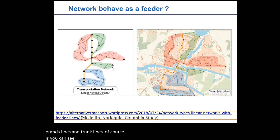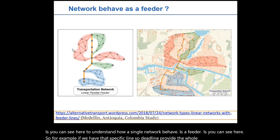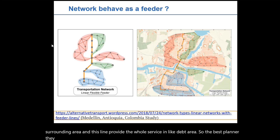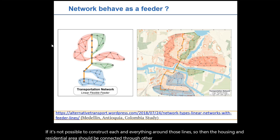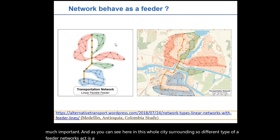To understand how a single network behaves as a feeder — one line provides the whole coverage in its surrounding area, and another line provides the whole service in its area. The best planners should always develop housing and residential areas around those transit lines. If it is not possible to construct everything around those lines, then the housing and residential areas should be connected through other branch, feeder, and trunk lines, which is very much important. Different types of feeder networks play a very important role in feeding passengers to the mass rapid transit line.